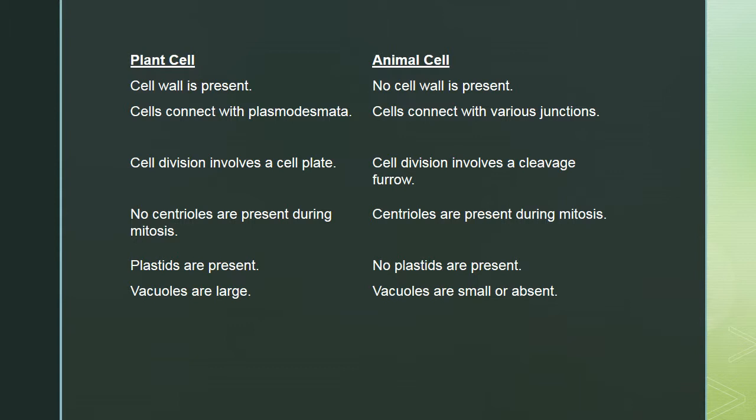Cell division in a plant cell involves a cell plate, whereas an animal cell involves a cleavage furrow. During mitosis there are no centrioles in plants but there are in animal cells. Plant cells have plastids such as chloroplasts, and they have very large vacuoles that allow for turgidity. Animal cells either have no vacuoles or very small ones.